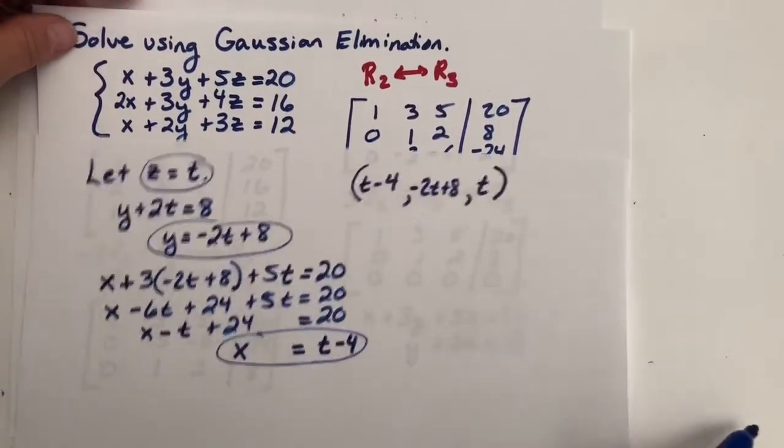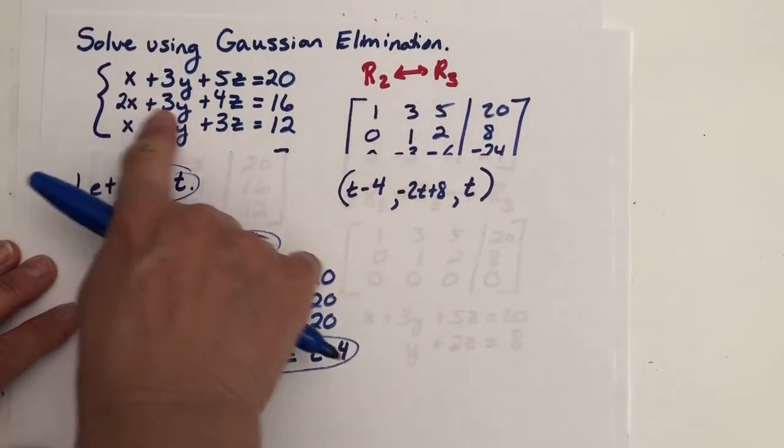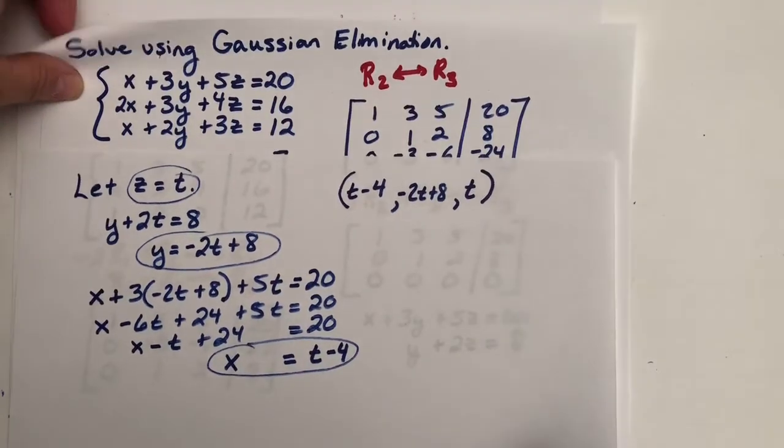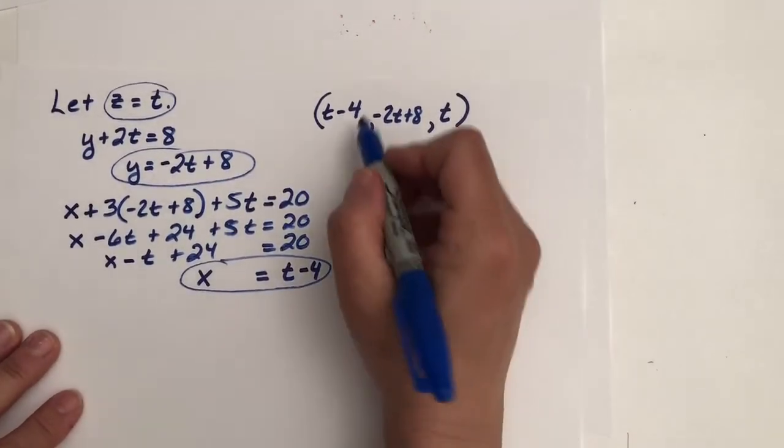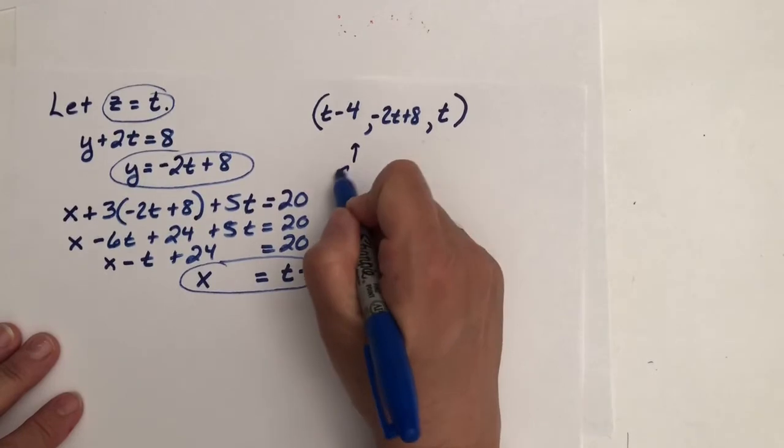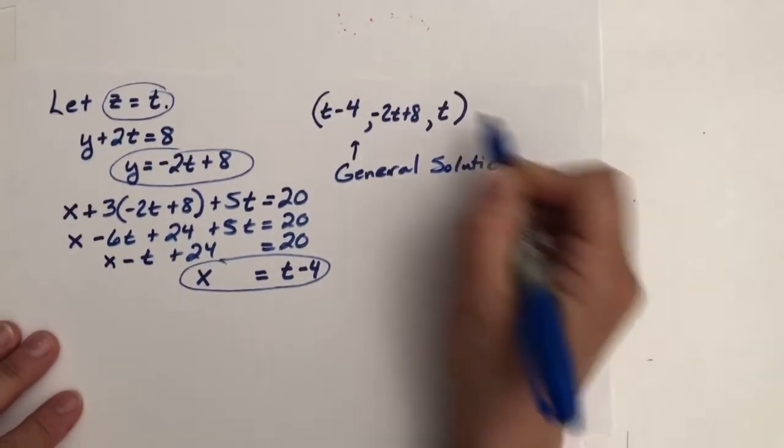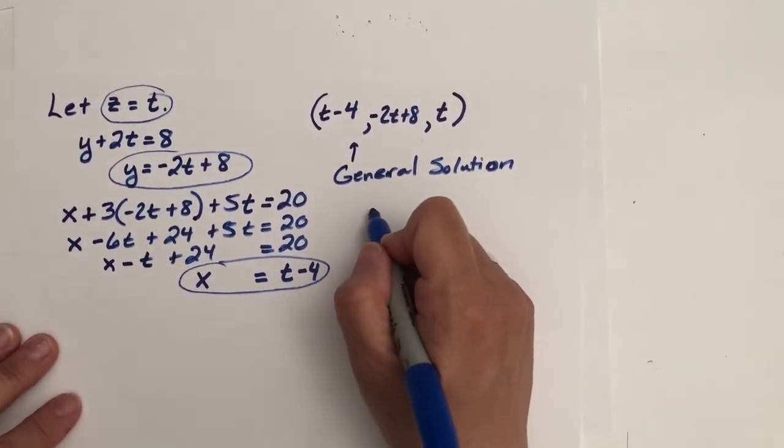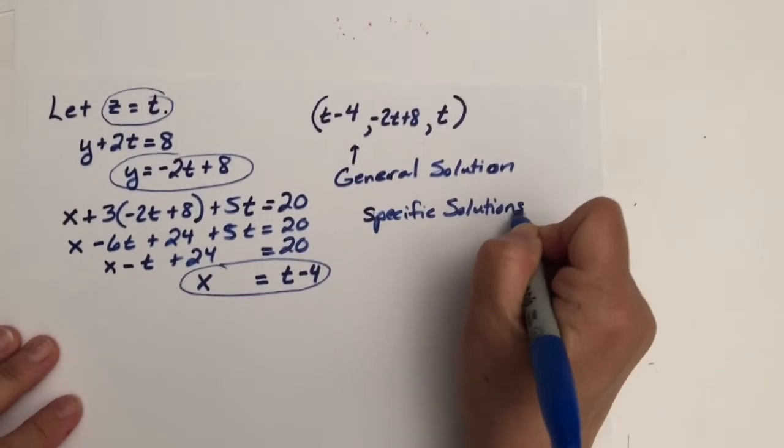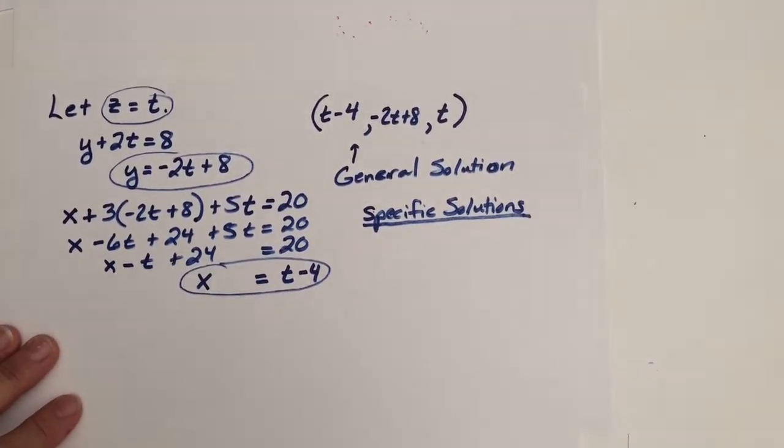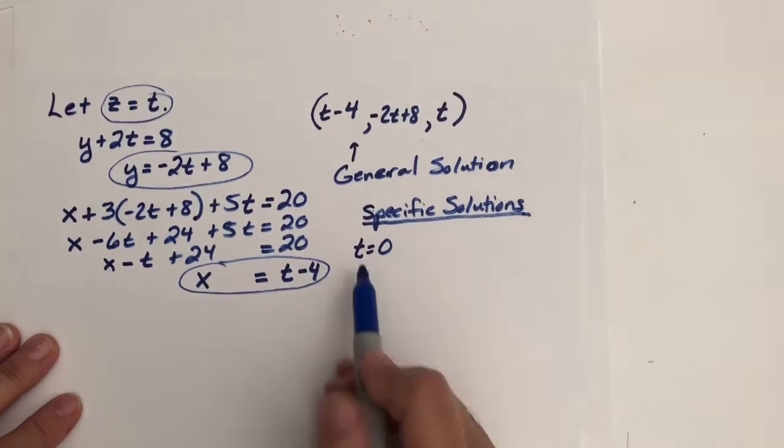So this is our general solution for the system that we started with. Let me bring it back. Here was our system. So we have a relationship between the x, y, and z's that are solutions to this system. So let's see what I mean by the relationship. We can come up with some specific solutions to that system. This is the general solution right here. And t can be any real number. So if you wanted just a few specific solutions, some solutions that would work in that system of equations, you can let t equal any real number.